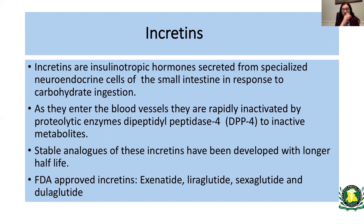The next big and exciting class of medications is incretins — currently a hot topic. Incretins are insulinotropic hormones secreted from specialized neuroendocrine cells in the small intestine in response to carbohydrate ingestion. They enter the bloodstream and are rapidly inactivated by the proteolytic enzyme dipeptidyl peptidase, or DPP-4. Stable analogues of incretins with longer half-lives have now been developed. FDA-approved incretins include exenatide, liraglutide, semaglutide, and dulaglutide.